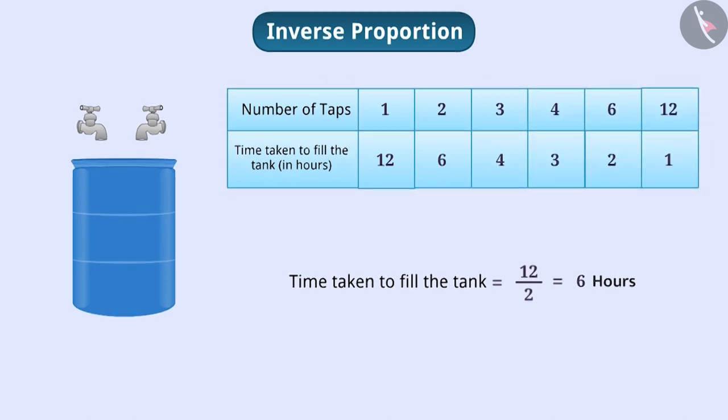Here, we see that if the number of taps increases, then the time required decreases. For example, when the number of taps increases from 1 to 2, the time decreases from 12 hours to 6 hours. The number of taps here has doubled, but the time to fill the tank is halved.